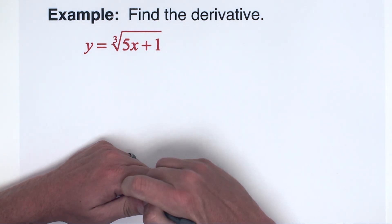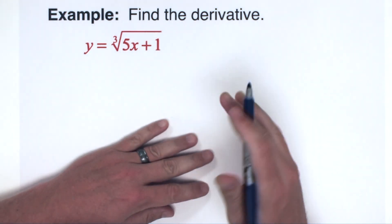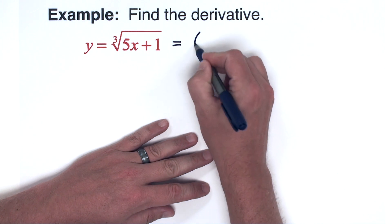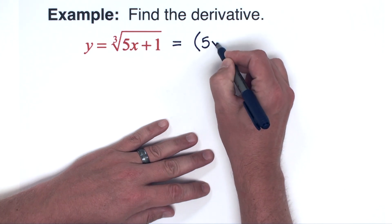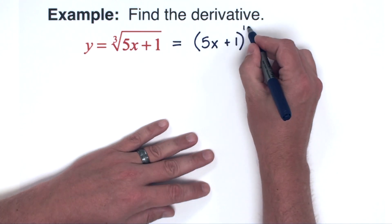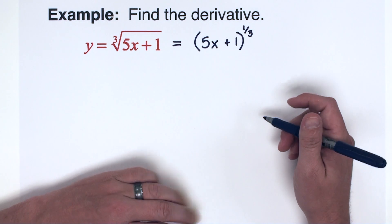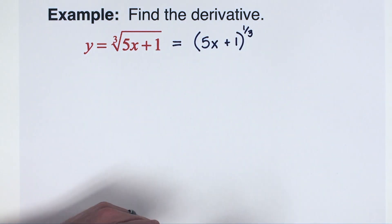Okay, here we have y equals the cube root of 5x plus 1. Again, very first step, rewrite this. I'm going to rewrite it as 5x plus 1, a cube root is a 1/3 power. So I'm always going to do that rewrite step first and then I'm going to go ahead and do the derivative.